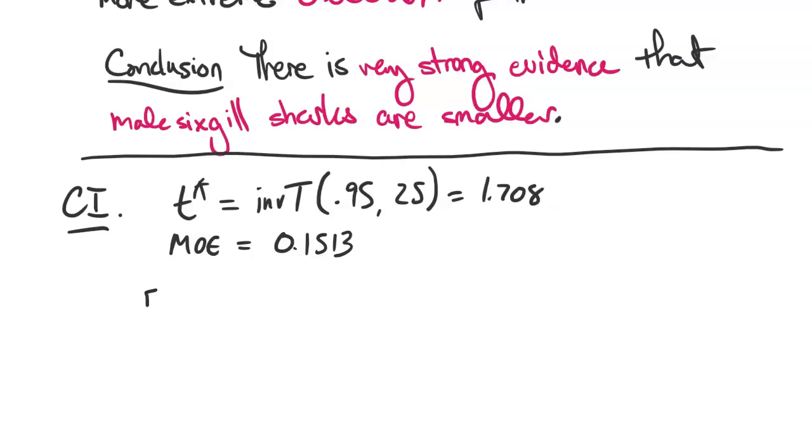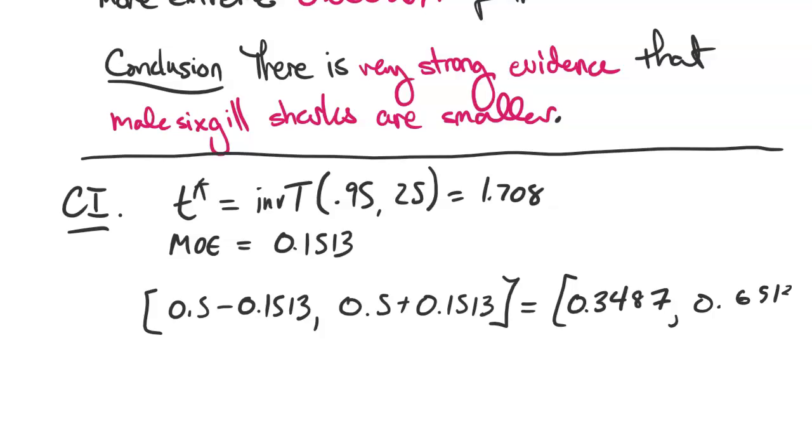Therefore, our confidence interval is 0.5 minus 0.1513 up to 0.5 plus 0.1513, which is 0.3487, 0.6513.